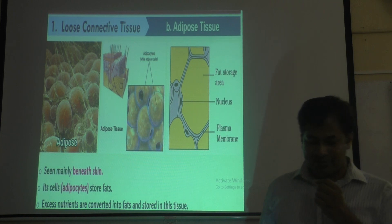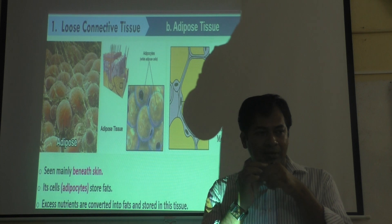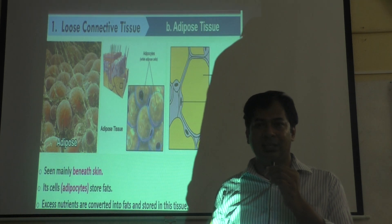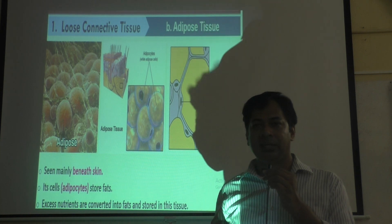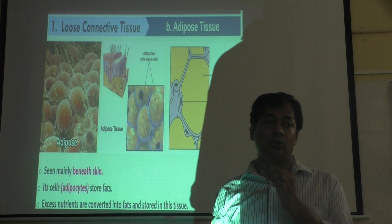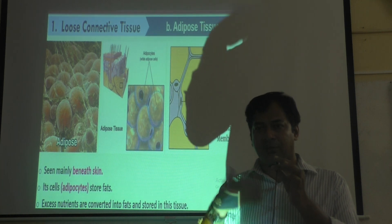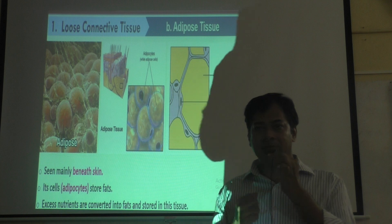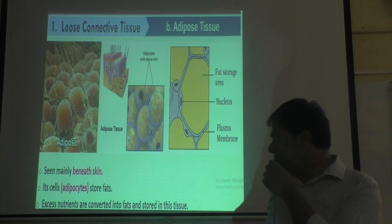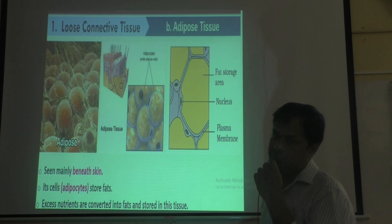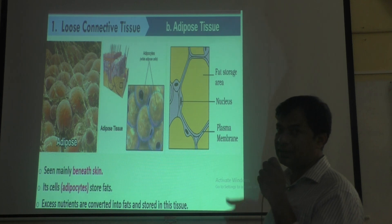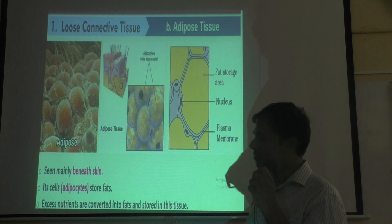Excess nutrients are converted to fat and stored in adipose tissue, especially in the belly area. People who eat a lot but do little physical exercise tend to accumulate extra fat — that fat is stored in adipocytes beneath the skin. Any oily or lipid content from food gets stored in this tissue. This is why body weight increases when physical activity is low.